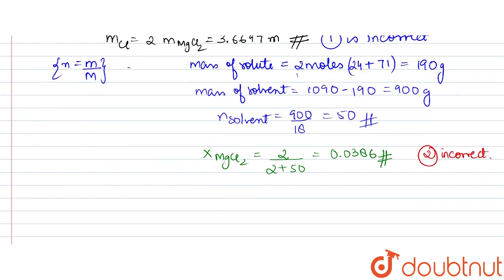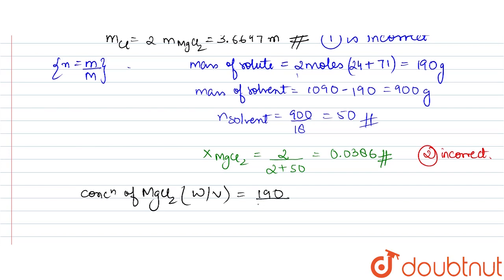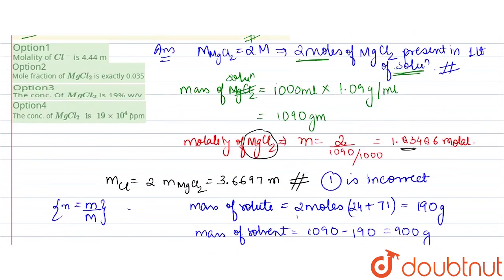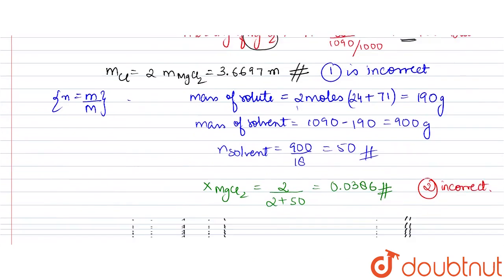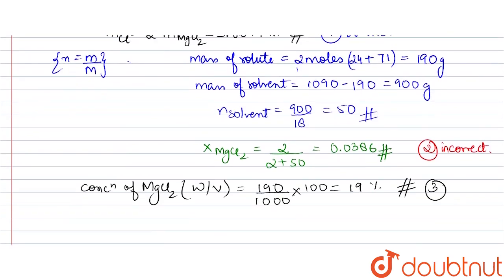For Option 3, concentration in weight by volume percent = (mass of MgCl₂ ÷ volume of solution) × 100 = (190 g ÷ 1000 mL) × 100 = 19%. Option 3 states 19%, which matches, so Option 3 is correct.